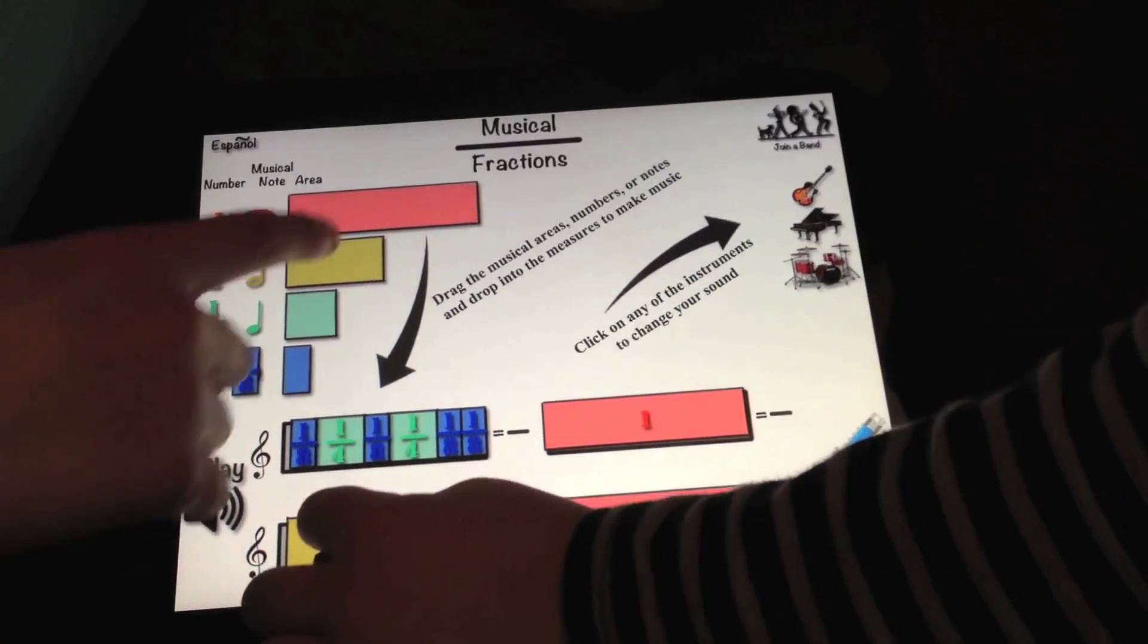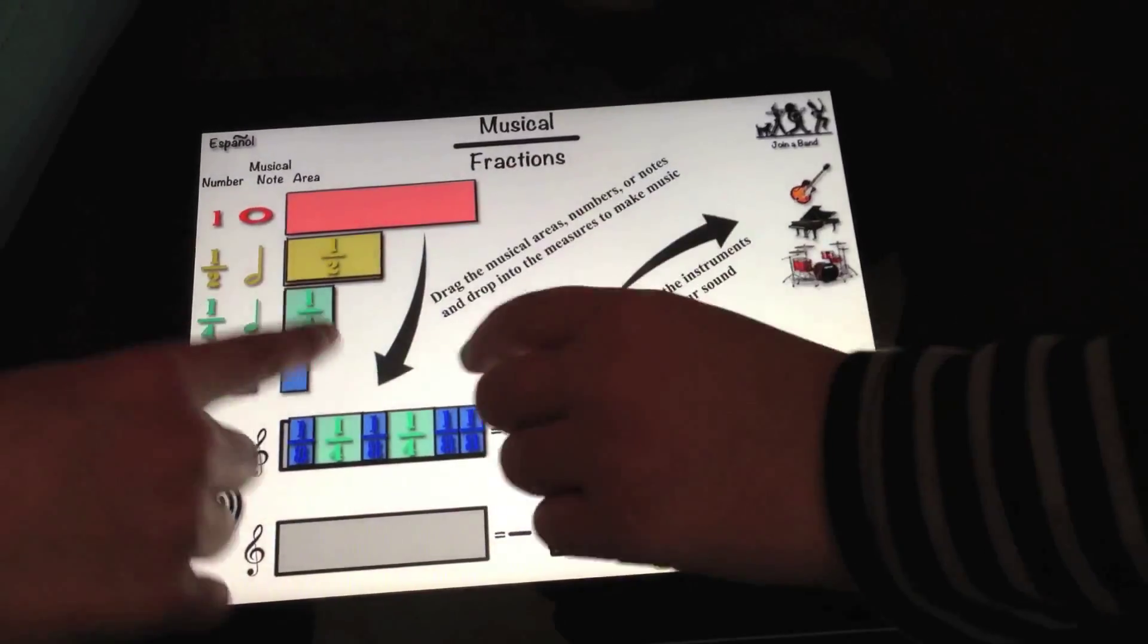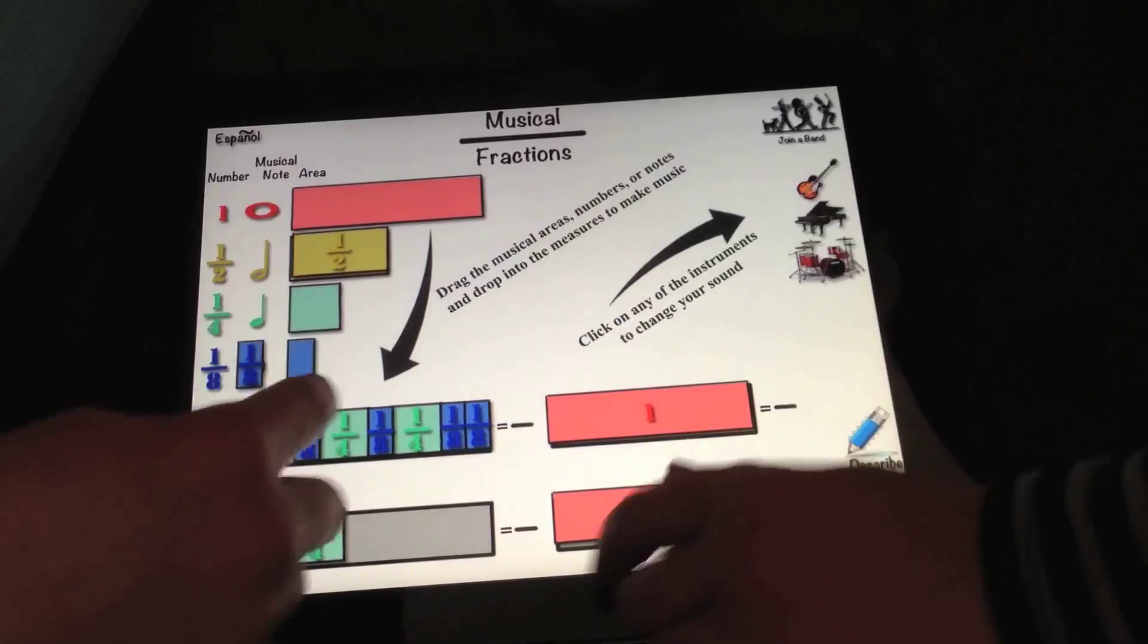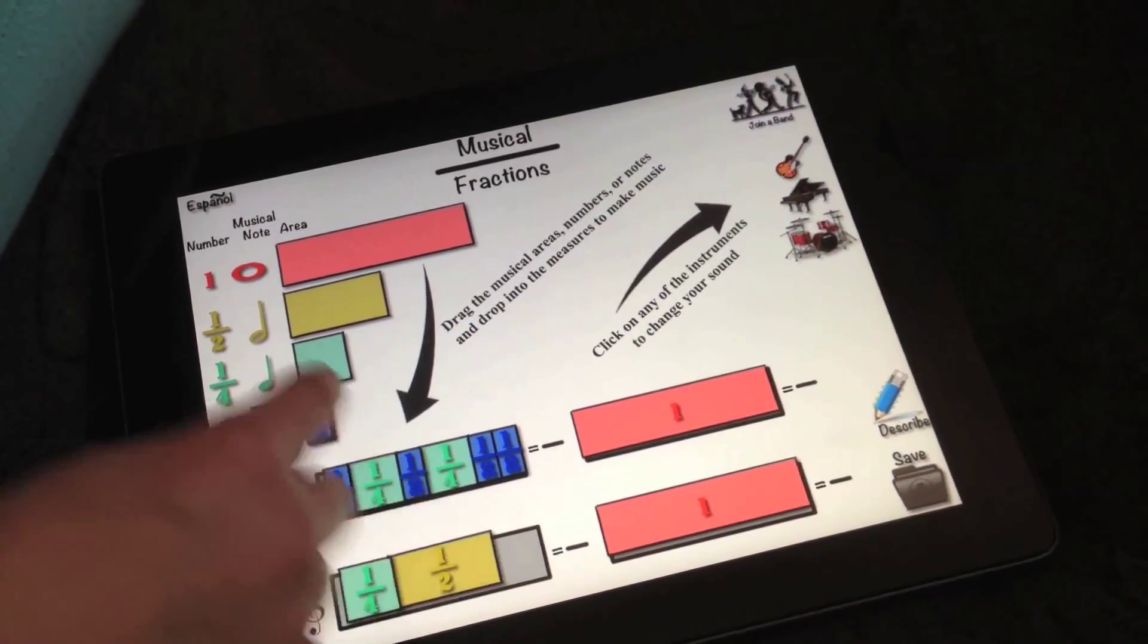Through manipulation, dragging and dropping the symbols onto the measures, the students can visualize and hear patterns, and see relationships.